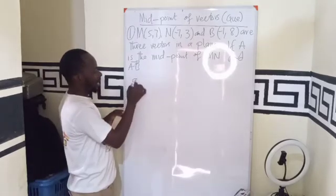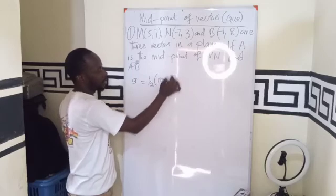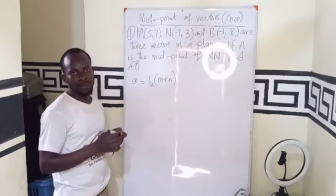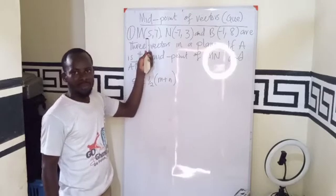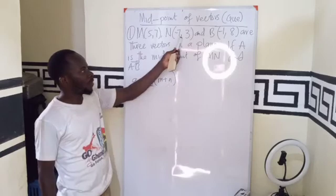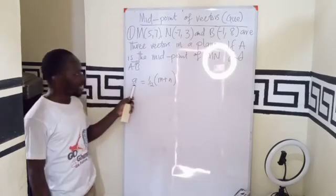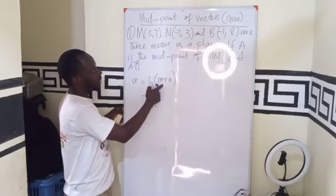The position vector A is going to be half of M plus N. So the position vector of M, which is the point we can convert to position vector with respect to the origin, the N also is given to us. So now our vector A can be derived by one half this.